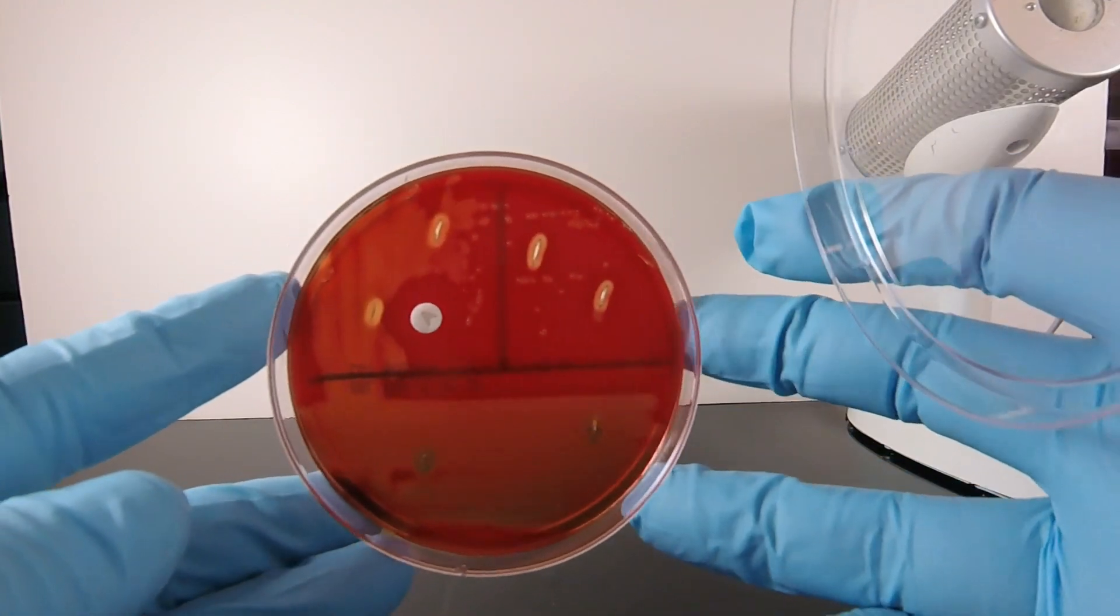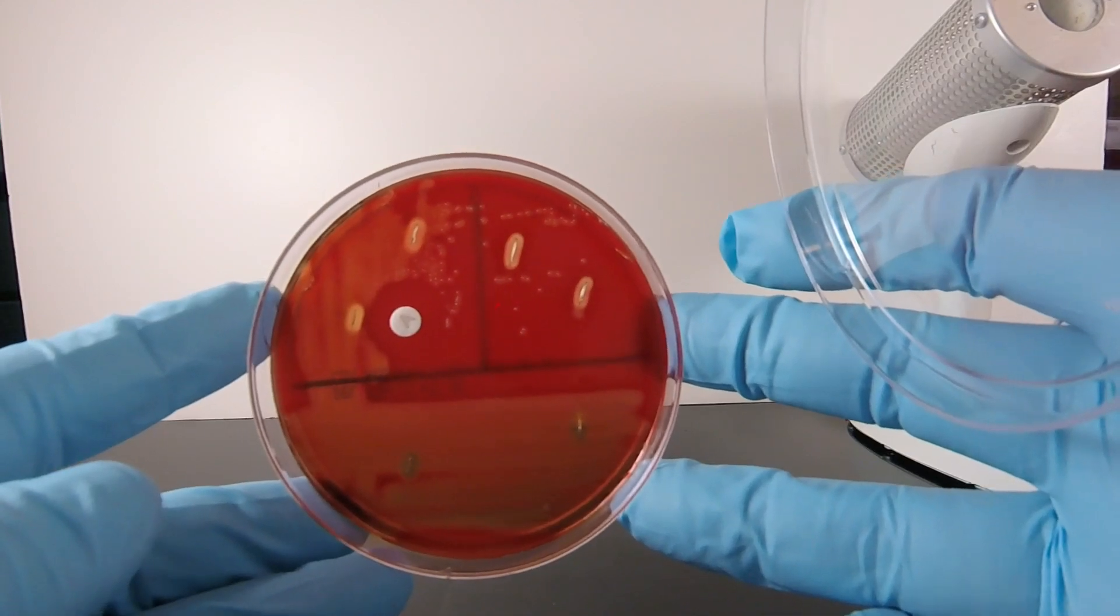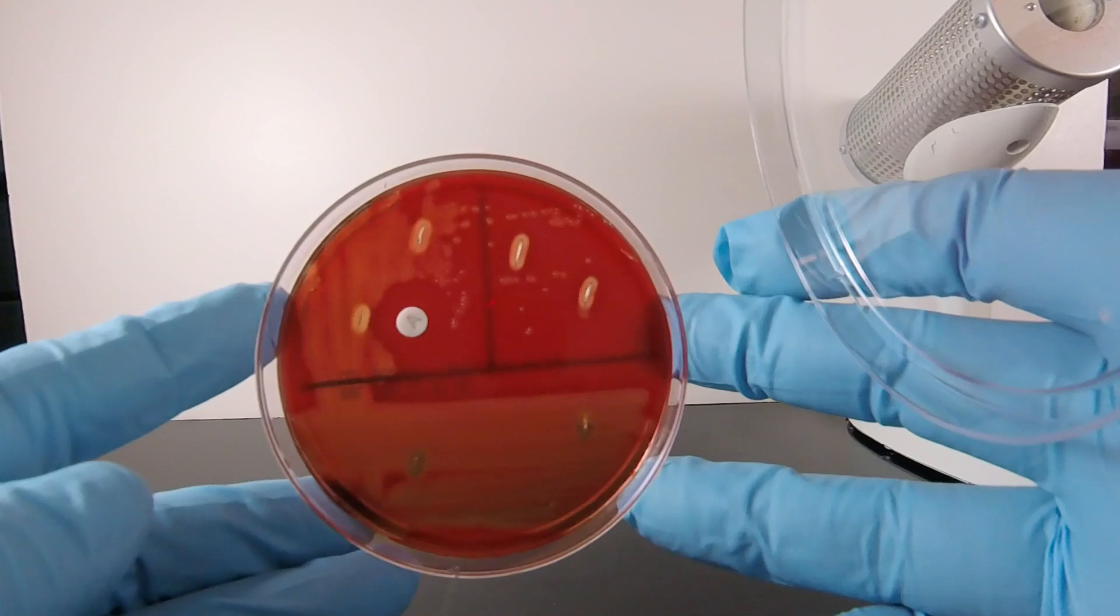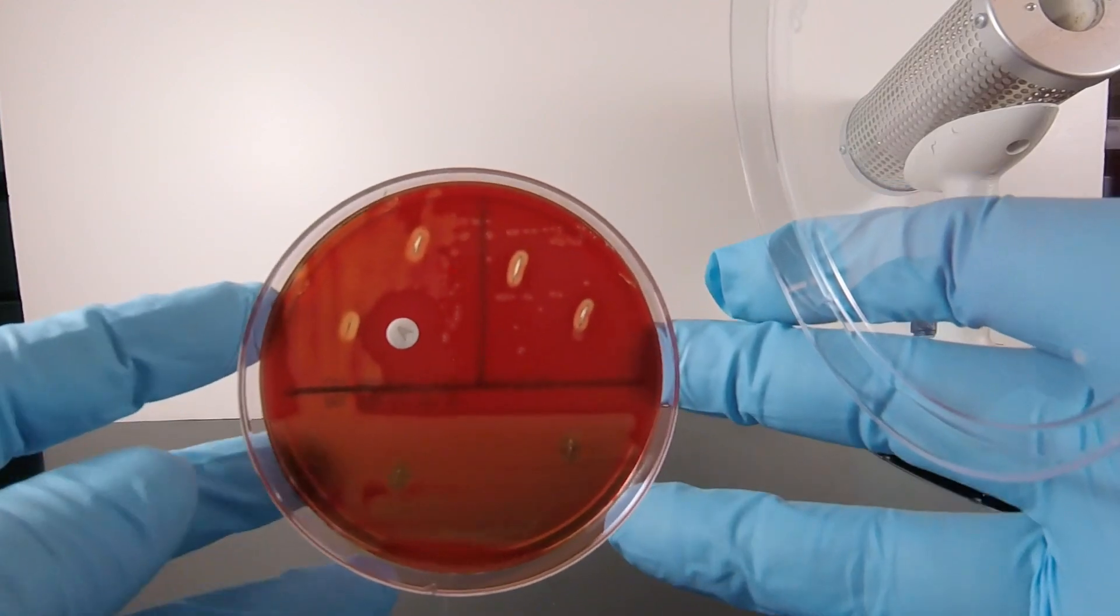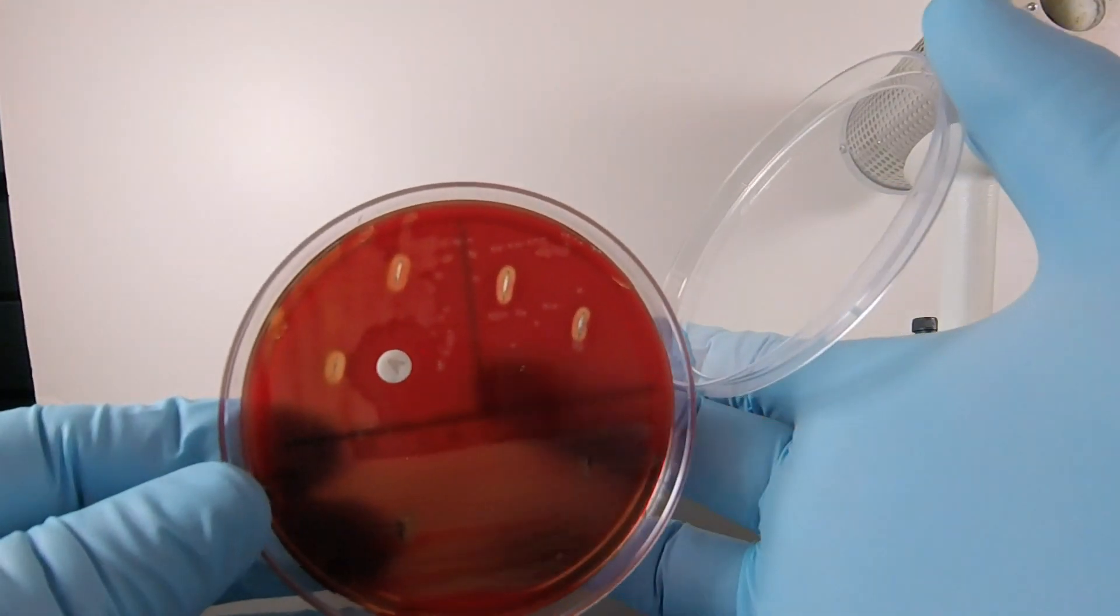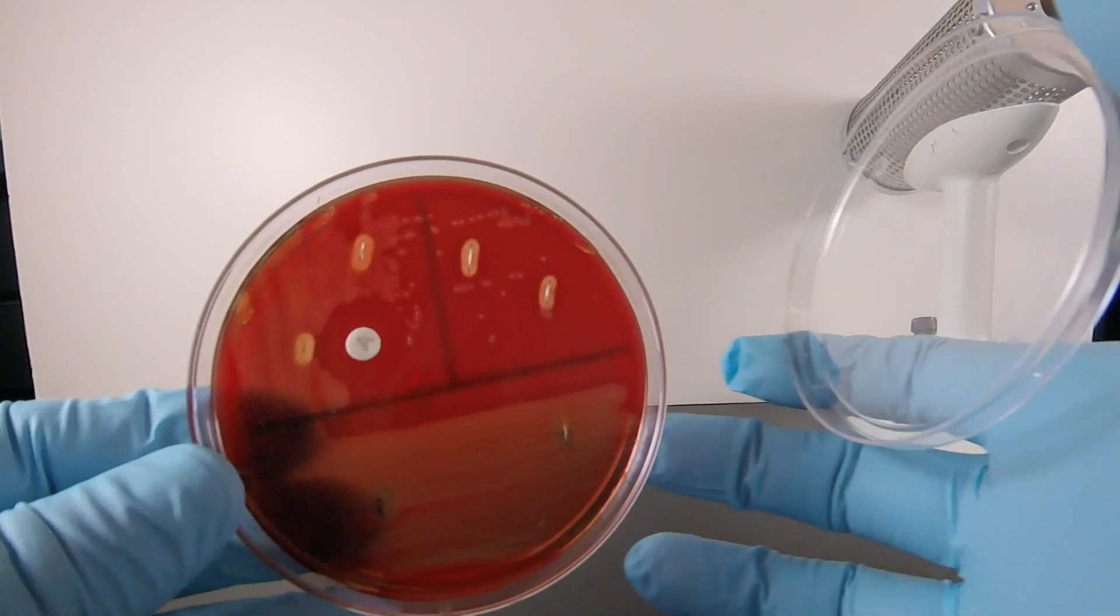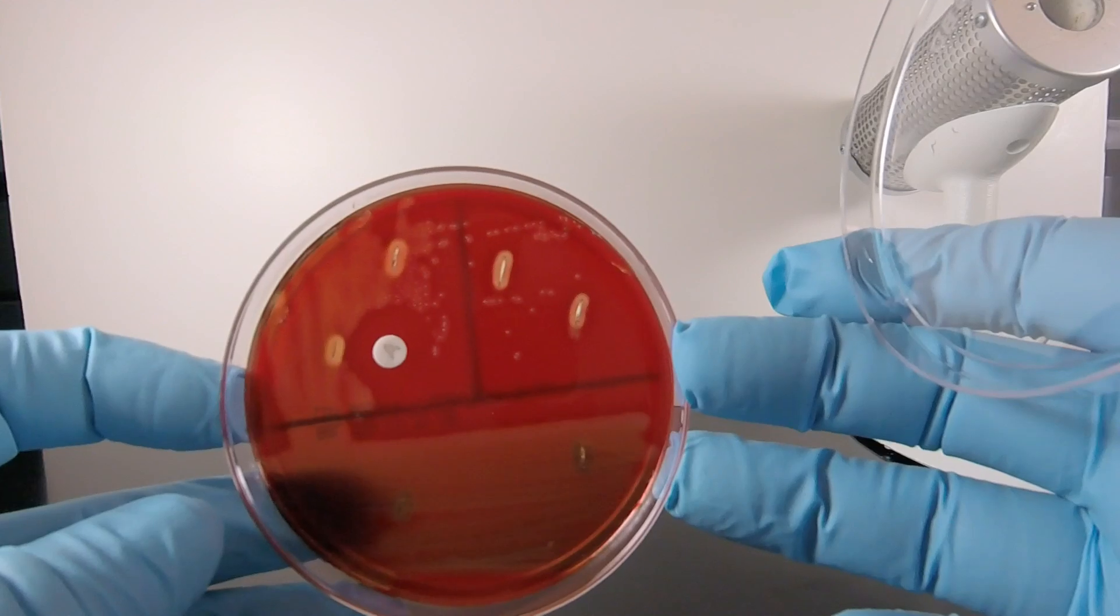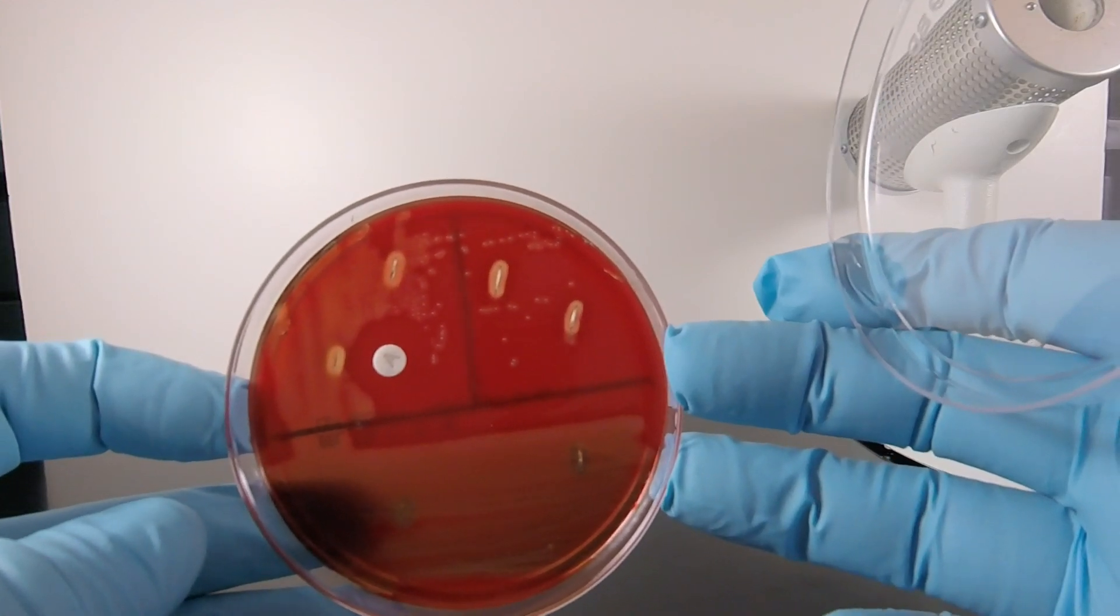You notice around the individual colonies there's kind of a partial clearing where the hemolysins are working their way through the agar. You see that around the individual colonies, around the solid growth, and again where the agar was stabbed, where all the hemolysins are functioning, you see complete hemolysis overnight.